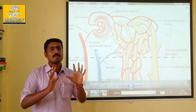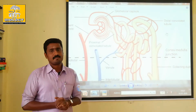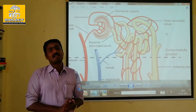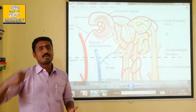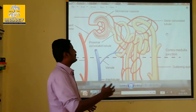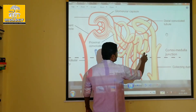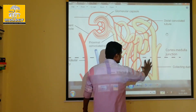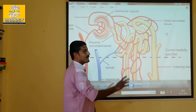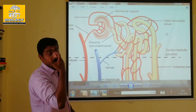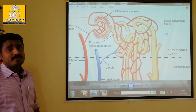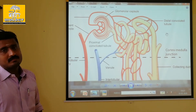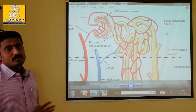In the distal convoluted tubule, water will be reabsorbed and reach the bloodstream. There are blood vessels on this side as well. With the help of ADH — this is an anti-diuretic hormone.